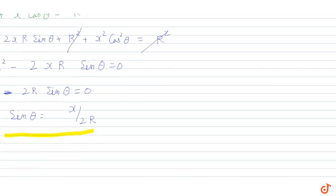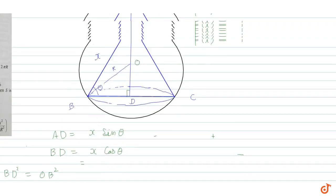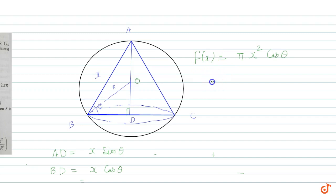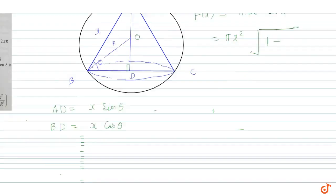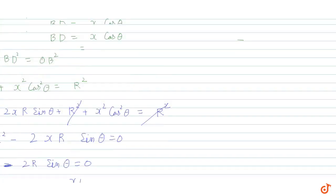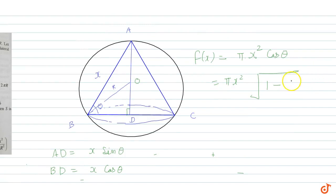Now sin theta is x upon 2r, so cos theta equals square root of 1 minus x by 2r whole square. This gives us f(x) equals pi x square into square root of 1 minus x by 2r whole square.